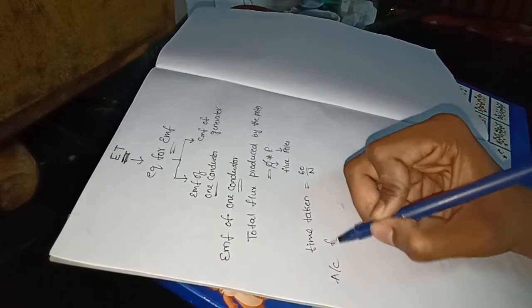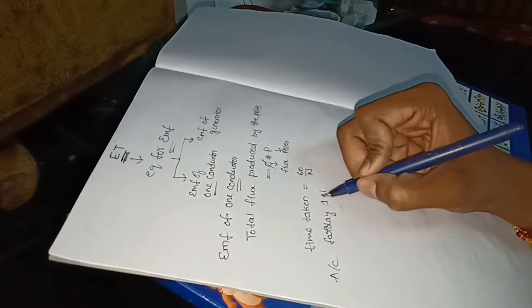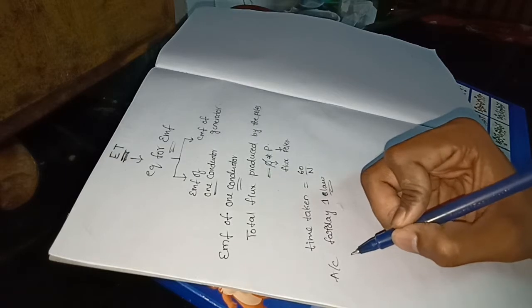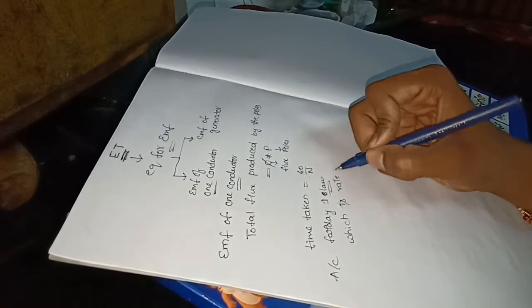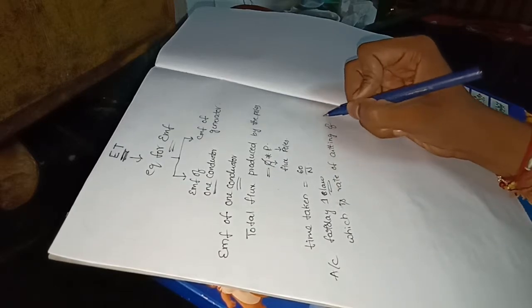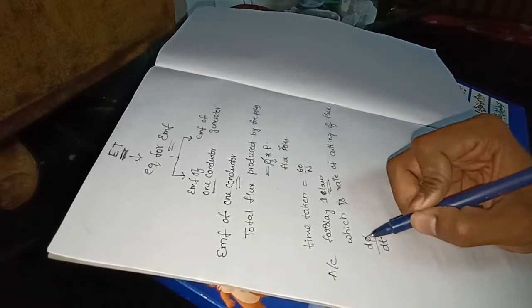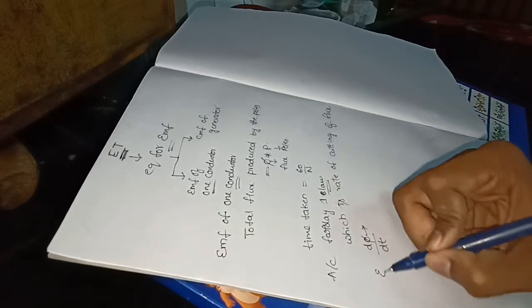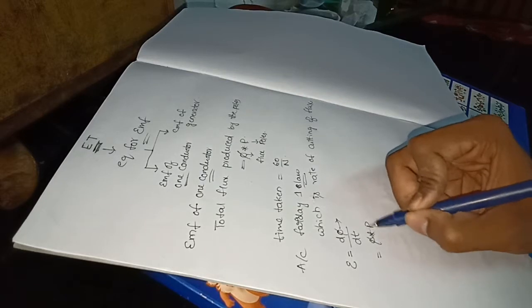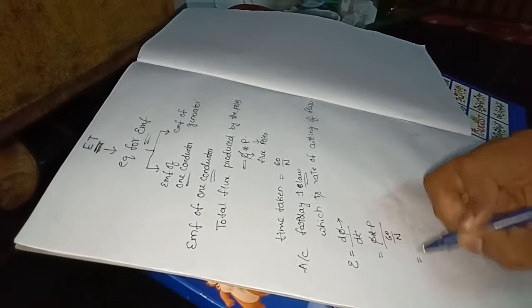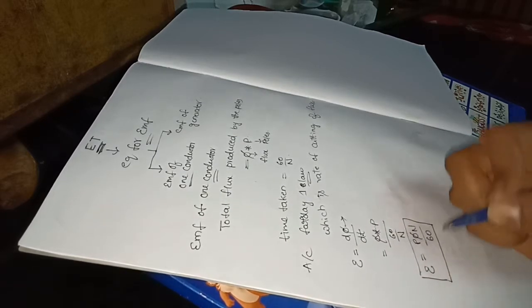According to Faraday's first law of electromagnetic induction, the induced EMF is equal to the rate of cutting of flux, that is d-phi by dt. So E equals total flux divided by time taken, which gives us phi into P divided by 60 by N, resulting in the formula: E = P·phi·N / 60. This is the EMF of one conductor.